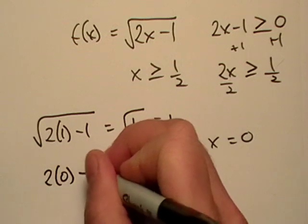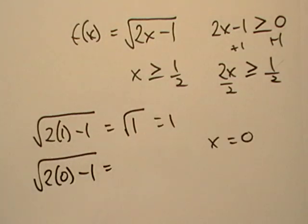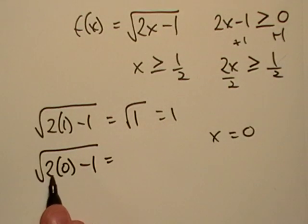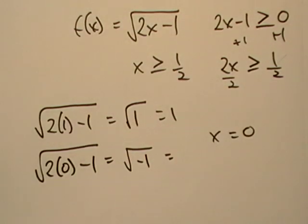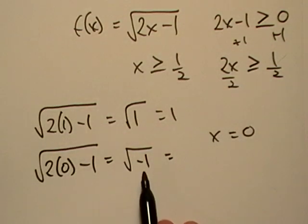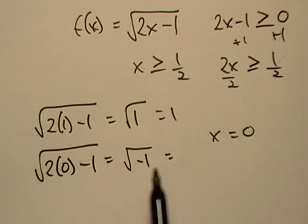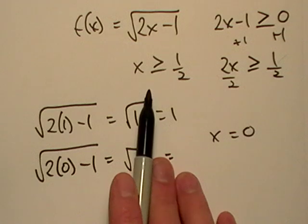So I go 2 times 0 minus 1, and that is going to be 0, and then I'm going to end up with a negative 1 right there. Well, that's actually a number, but it's not a real number. So you see what happened there? Everything got a little messed up when we disobeyed our domain.